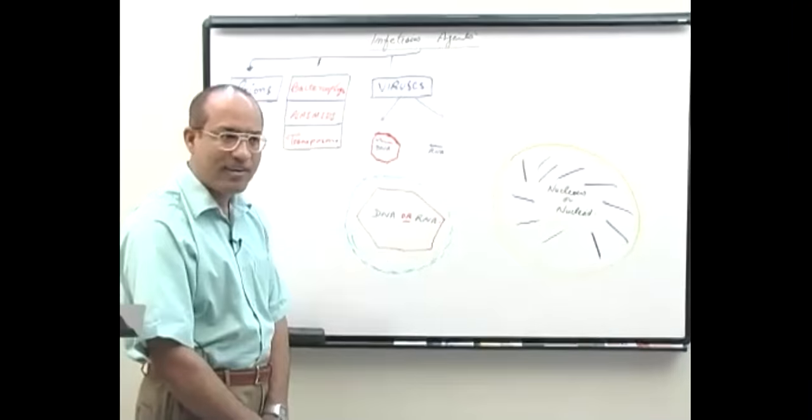Another difference: in eukaryotic cells, messenger RNA is monocistrontic — one mRNA codes for one peptide. In bacteria, messenger RNA may be monocistronic or polycistronic. What is the concept of monocistronic versus polycistronic messenger RNA?